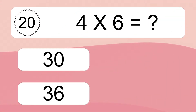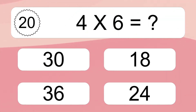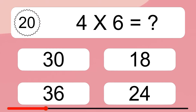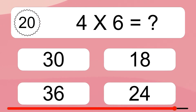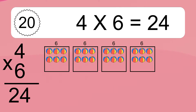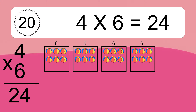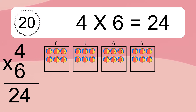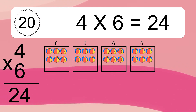4 times 6 equals what? 4 times 6 equals 24. We have 4 boxes, and each box has 6 colorful balls inside. If you count all the balls in all the boxes together, you will have 4 times 6 balls. This equals 24 balls.